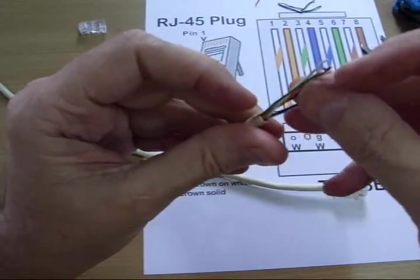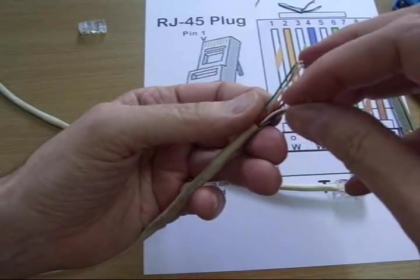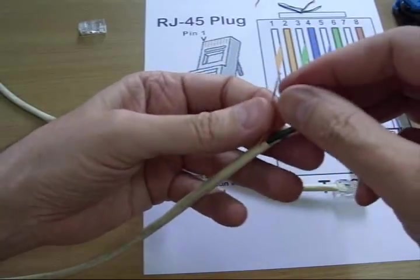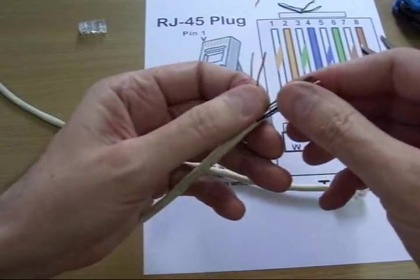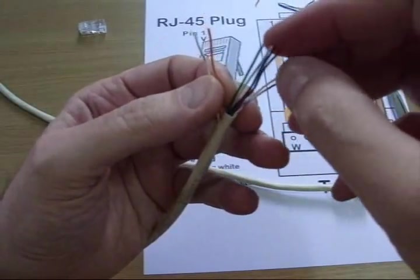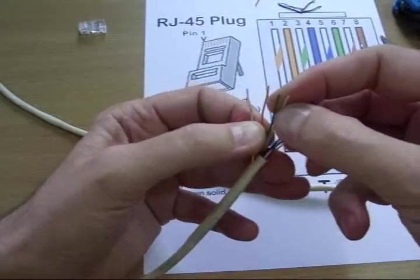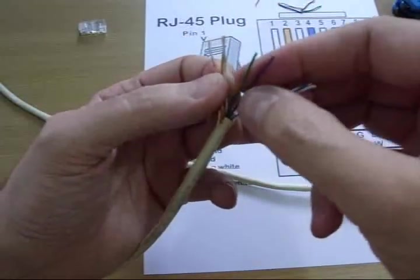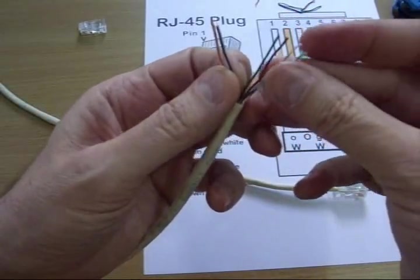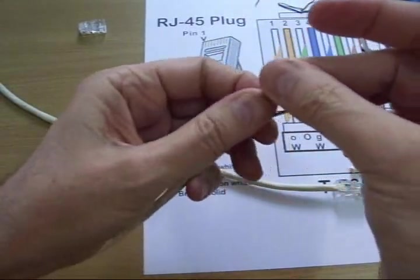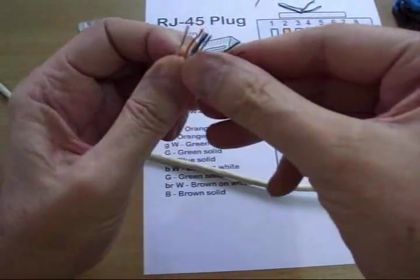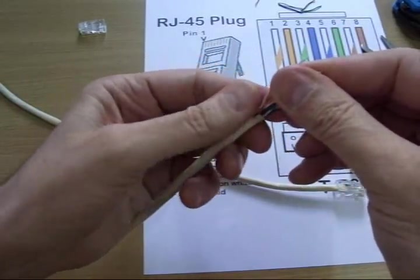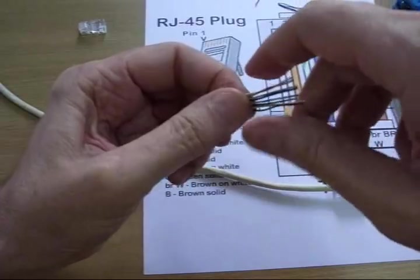First, this side is exactly the same as the other end was. Orange on white, then orange, then green on white, then blue, then blue on white, then green, then brown on white, then brown. Again, I'm going to be more aggressive about getting this flat.